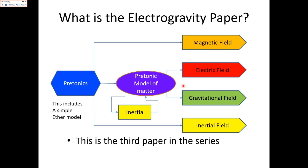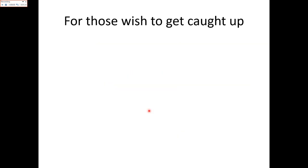So what is going to be the entailment of the Electrogravity paper? It's going to begin at the beginning with pre-tonics. The pre-tonics are going to evolve into a pre-tonic model of matter. From there, we're going to derive the magnetic field, the electric field, the gravitational field, and the inertial field. We'll show that the inertial field is part of pre-tonics and embedded in the pre-tonic model of matter.